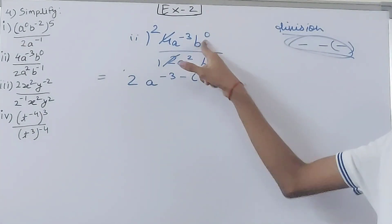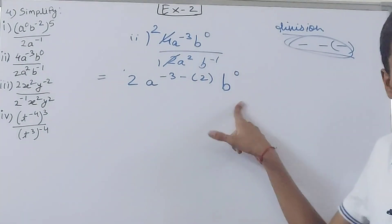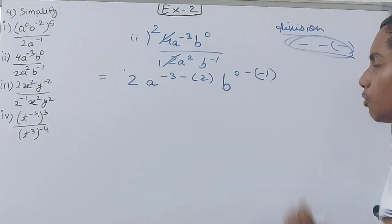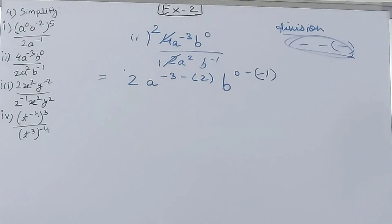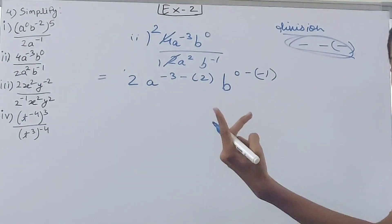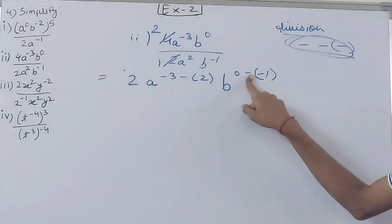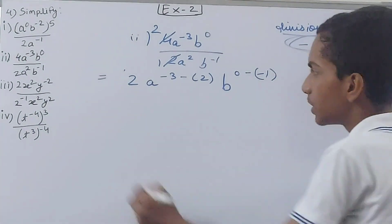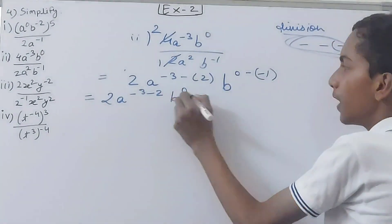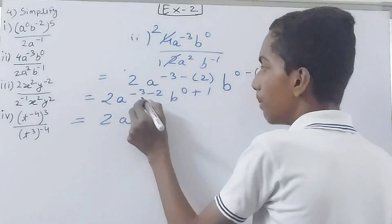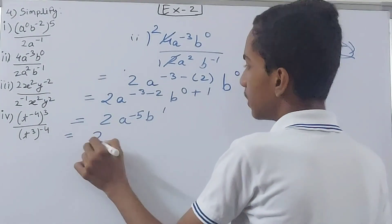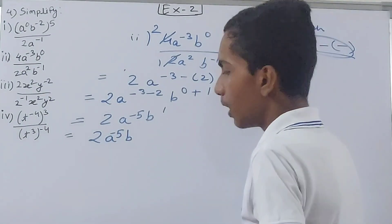For b: b to the power 0 is in the numerator and b to the power minus 1 is in the denominator. So we do 0 minus (minus 1). Most of you make the mistake of writing 0 minus 1 — that is wrong. We need 0 minus minus 1, because the minus sign of the exponent is different from the subtraction minus sign. So we get: 2a to the power minus 3 minus 2 = minus 5, and b to the power 0 minus minus 1 = 1.